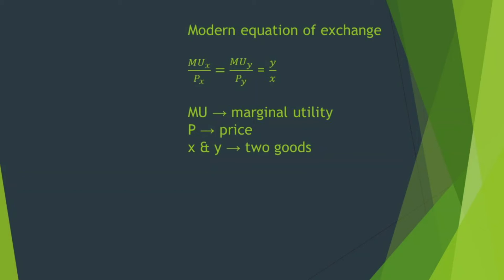MU represents marginal utility, P represents price, and X and Y are the two goods. In this equation, marginal utility is compared with the price, or it is considered as the ratio of prices of the commodities. Exchange takes place by comparing the exchange value with the use value — exchange value is price and use value is utility. The objective of exchange is the equalization of the final degree of utilities from different commodities, so that total utility is maximum and exchange maximizes pleasure.